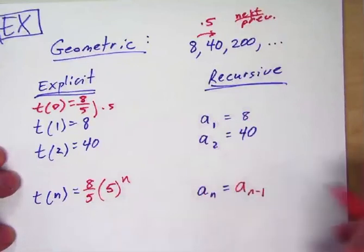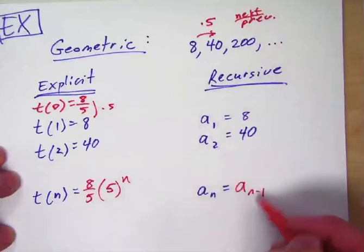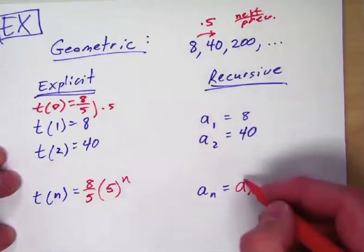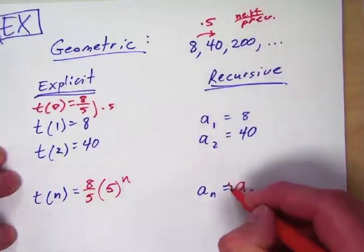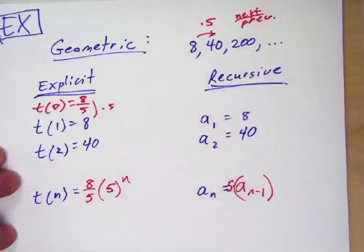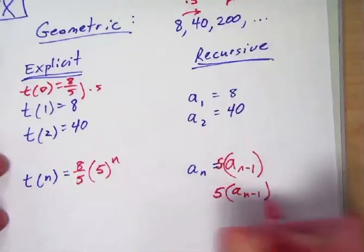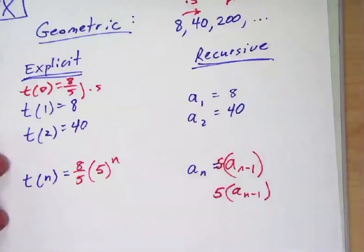Recursively, what I do is I say okay I want to figure out a sub n which is a sub anything. I need to know the previous term and then what is happening to it. What is happening to this previous term? Well every single time it's being multiplied by 5. So what you can do is say okay I want 5 times this thing. So it's 5 times the previous term. That's all I'm doing. That's the recursive definition.